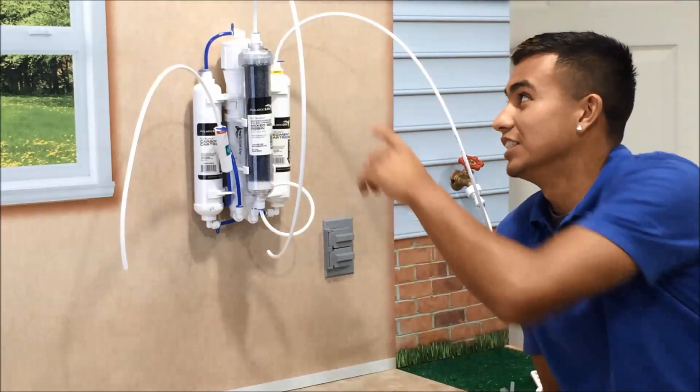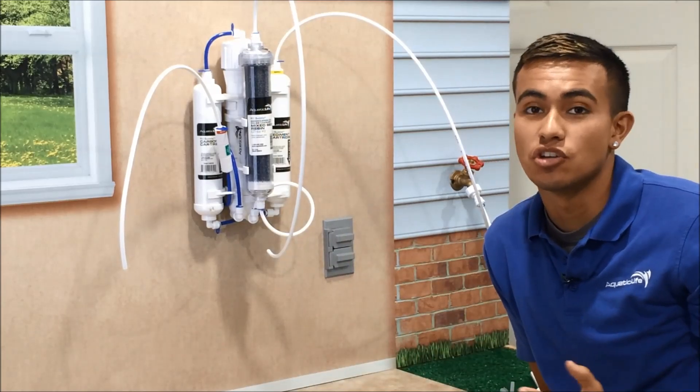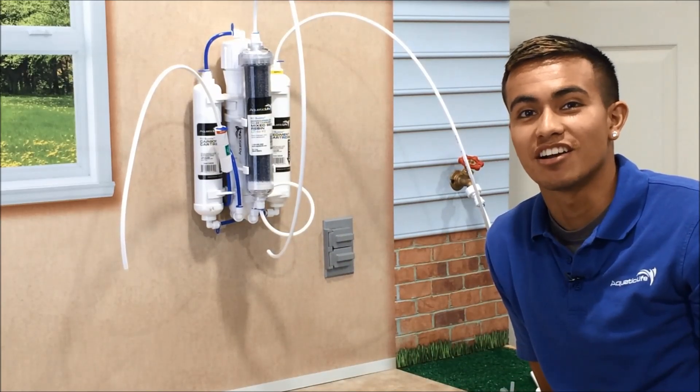The last thing you'll do is install tubing on the top of the DI cartridge, and the cartridge is clear so you can tell when the media changes color and you'll know when to change the cartridge. For this and other products, visit us on the web at aquaticlife.com. Happy reefing!